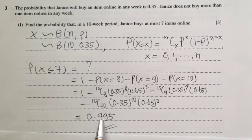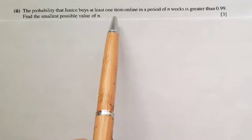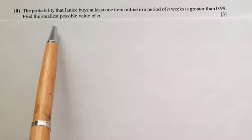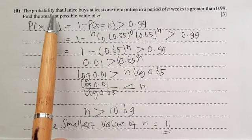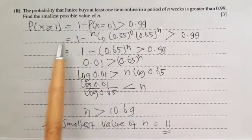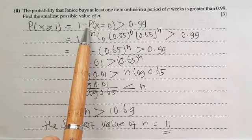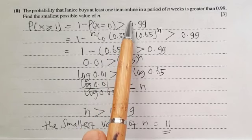The value of P(X ≤ 7) is 0.99, correct to three significant figures. Now for part (ii): the probability that Jenny buys at least one item online in a period of n weeks is greater than 0.99. So P(X ≥ 1) > 0.99, which equals 1 − P(X = 0) > 0.99.